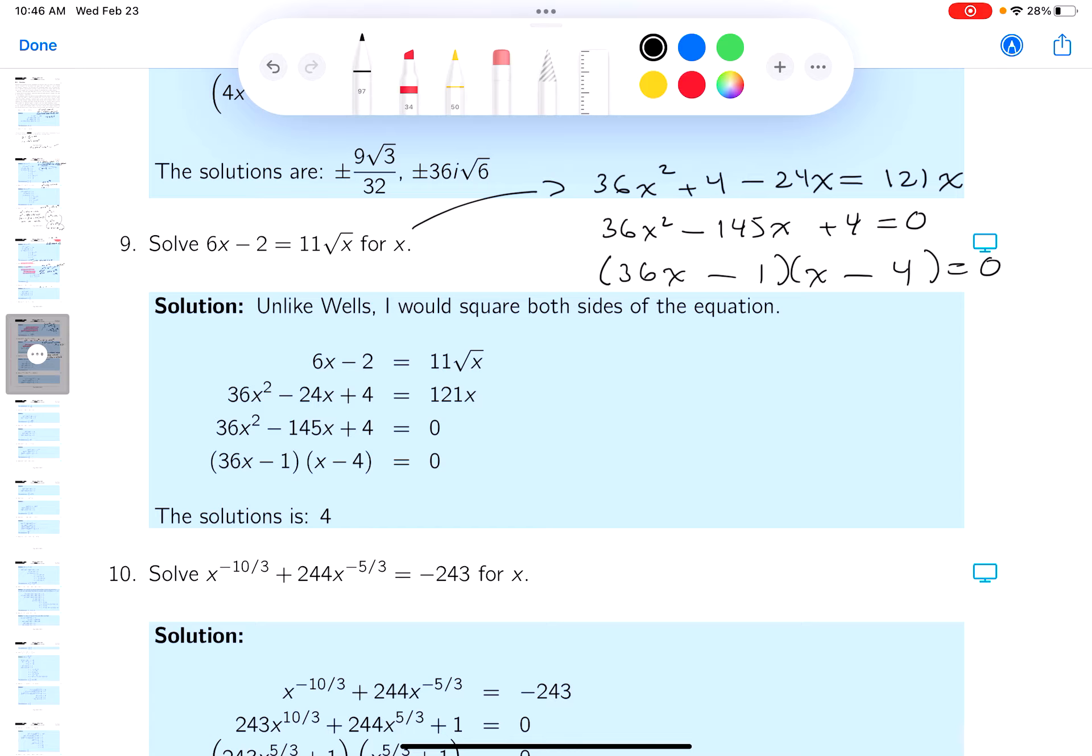Let's see if that works. Do I get 36x²? Of course I do. Do I get plus 4? Of course I do. My concern is, do I get this in the middle? And what do you get? Minus 144 minus 1. Yeah, we get it.